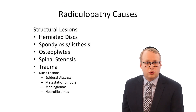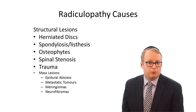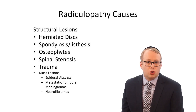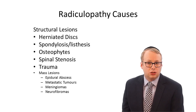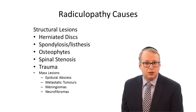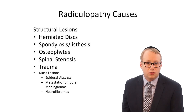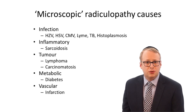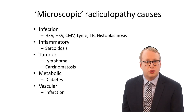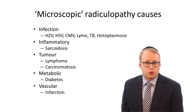Here is a list of potential causes of nerve root irritation and/or impingement that can be seen on an MRI. One of the commonest causes is intervertebral disc herniation. The mechanism of pain is understood to be primarily due to inflammation of the nerve roots rather than their compression. Here is also a list of microscopic causes which can cause radiculopathy too, which may not be evident on an MRI.